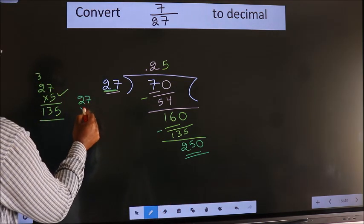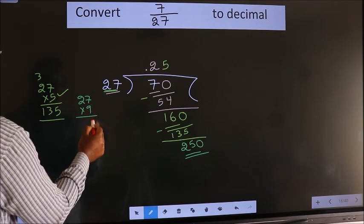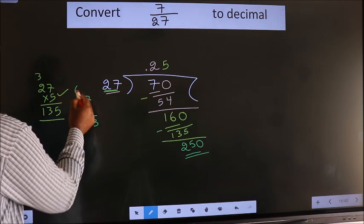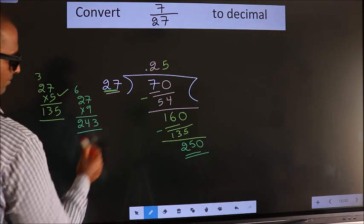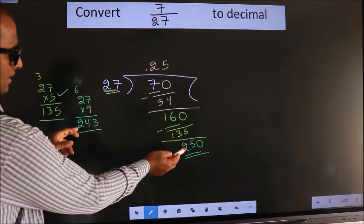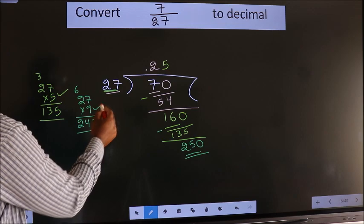So 27 nine times: 9 times 7 is 63, carry 6. 9 times 2 is 18 plus 6 is 24. So 243 is close to 250, so we go with 9.